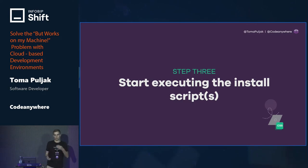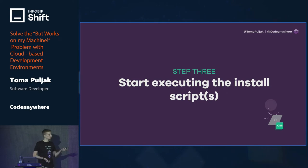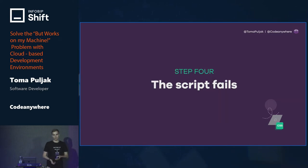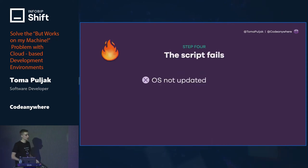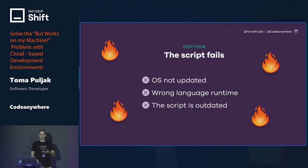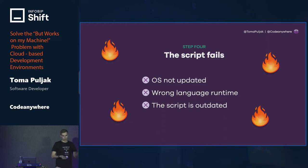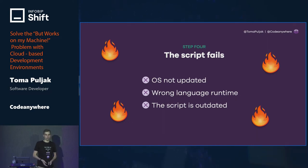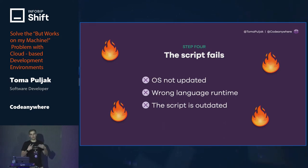Step three is start executing some installation scripts or go through the runbook — basically go through every step you need to set up the development environment. Step four is the script might fail for any number of reasons. Maybe your OS isn't updated, maybe you have the wrong language runtime or wrong database version, or the script is simply outdated because sometimes we install something locally and never update the documentation.